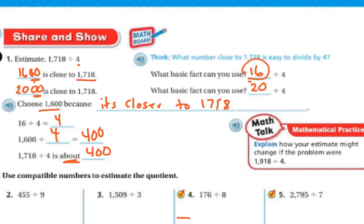Now, if we were doing a range, then I would do the 1600 and I would do the 2000, and then it would be between 400 and whatever the 2000 was. But on this one, they just wanted you to estimate the one time.